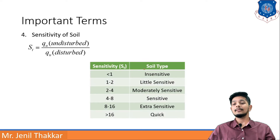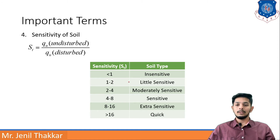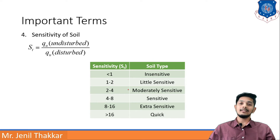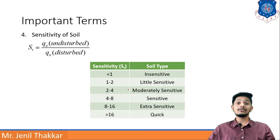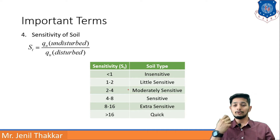Sensitivity classification: if sensitivity is less than 1, soil is insensitive; 1 to 2 is a little sensitive; 2 to 4 is moderately sensitive; 4 to 8 is a sensitive type of soil; 8 to 16 is extra sensitive soil; and if it is greater than 16, it is a quick soil — it will collapse quickly.